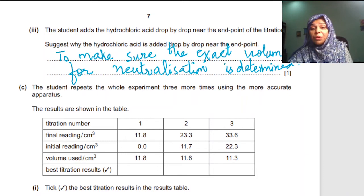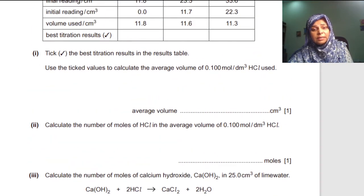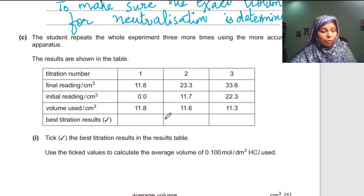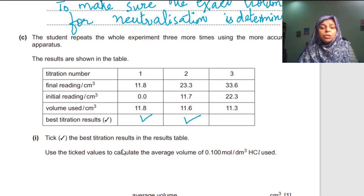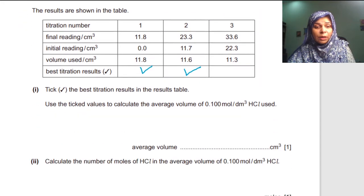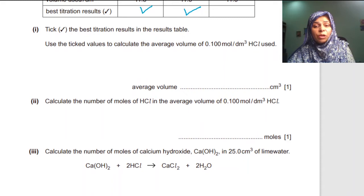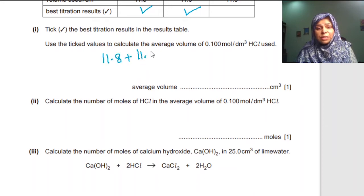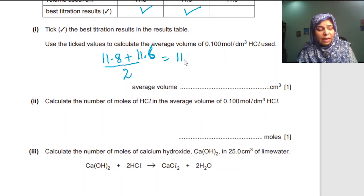The student repeats the whole experiment three more times using more accurate apparatus, giving these values. The nearest concordant values are 11.8 and 11.6, with a difference of only 0.2, which is acceptable. To calculate the average volume: (11.8 + 11.6) ÷ 2 = 11.7 cm³ of HCl used.